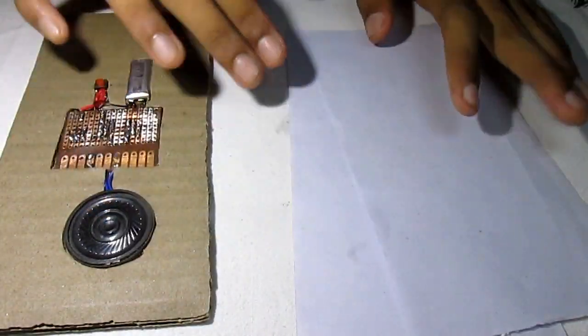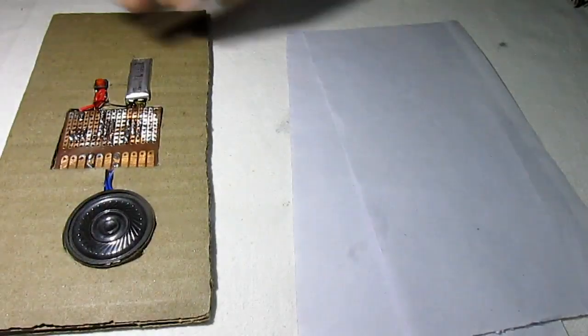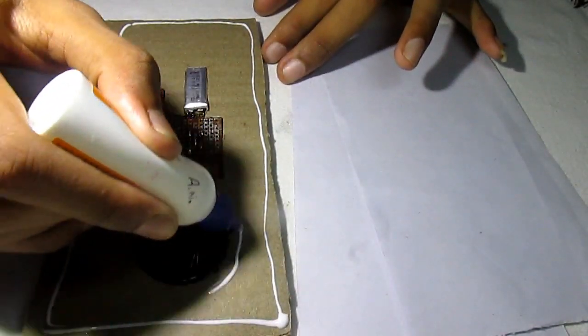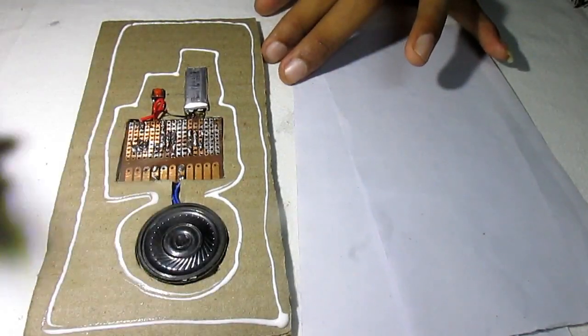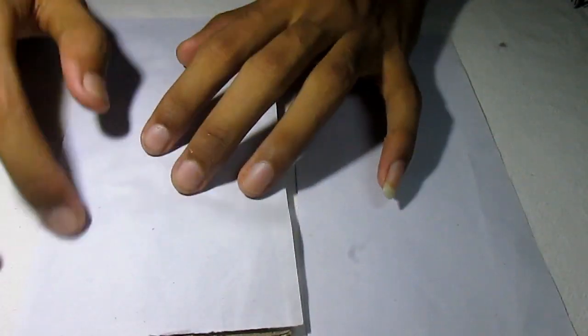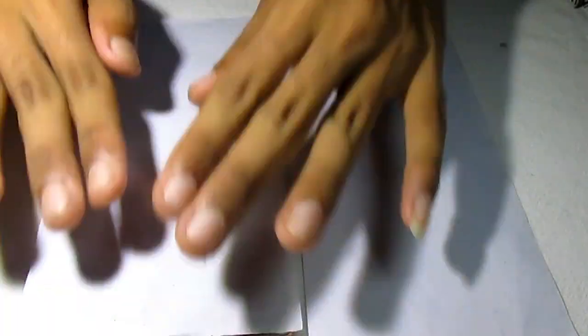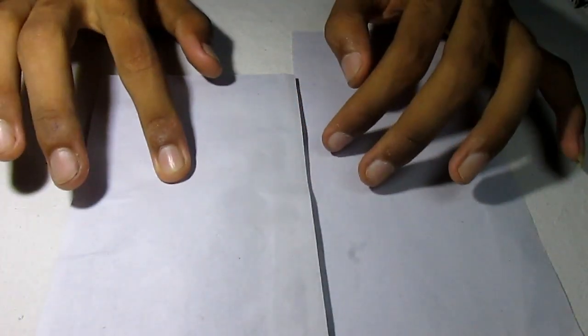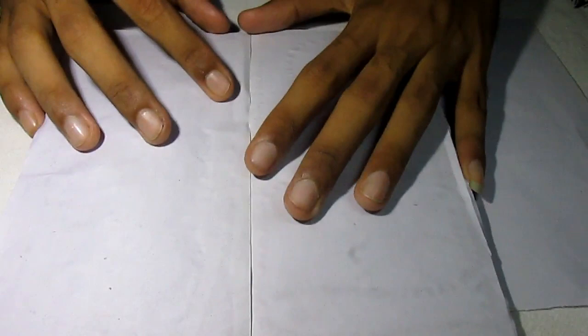Now, take two white sheets of paper similar in dimension to the cardboard piece. Apply adhesive on the cardboard making sure not to drop any onto the circuit board. Now, place one white sheet of paper to cover up the circuit board like so. Cover the other piece of cardboard with white sheets of paper as well.